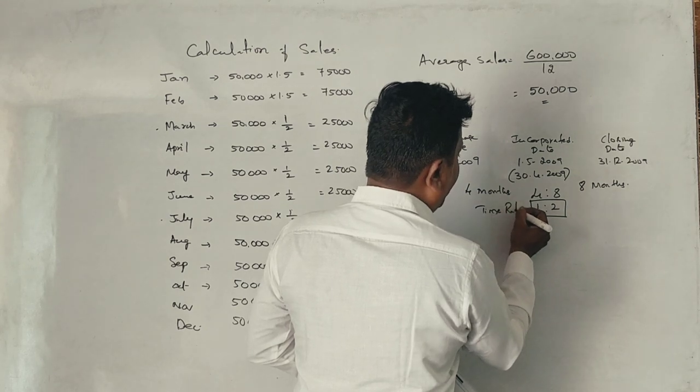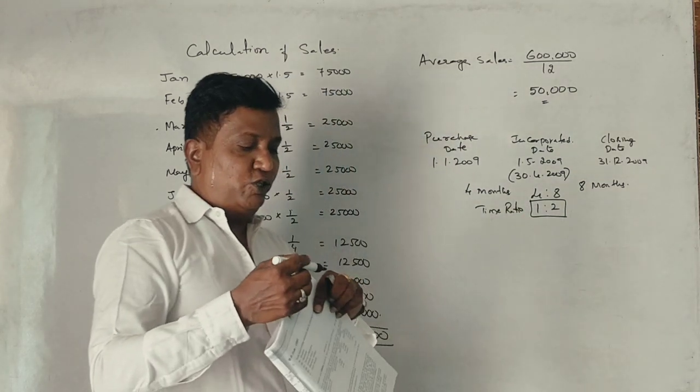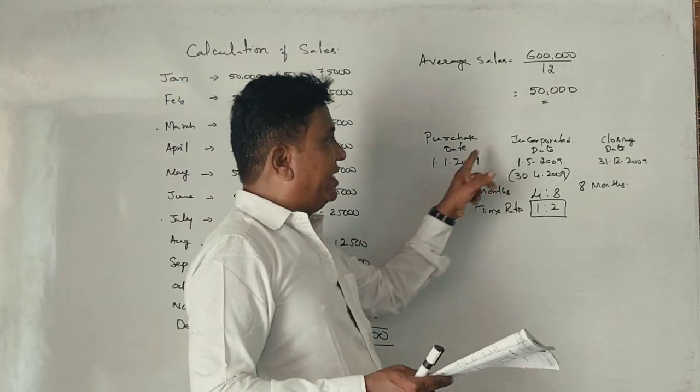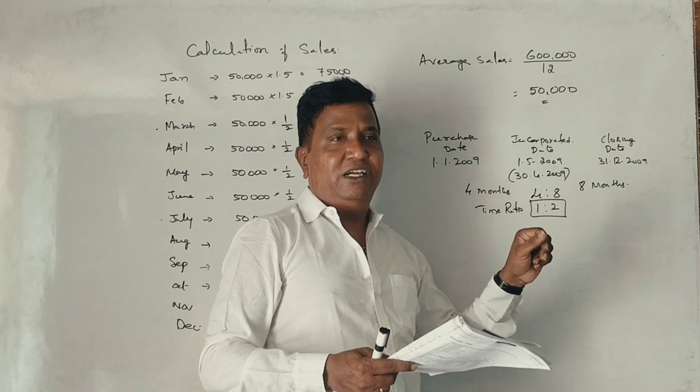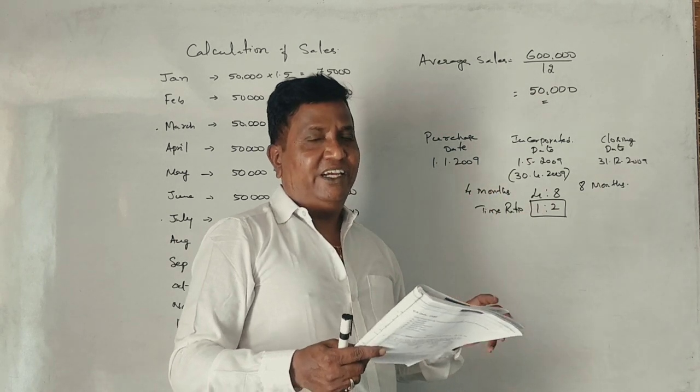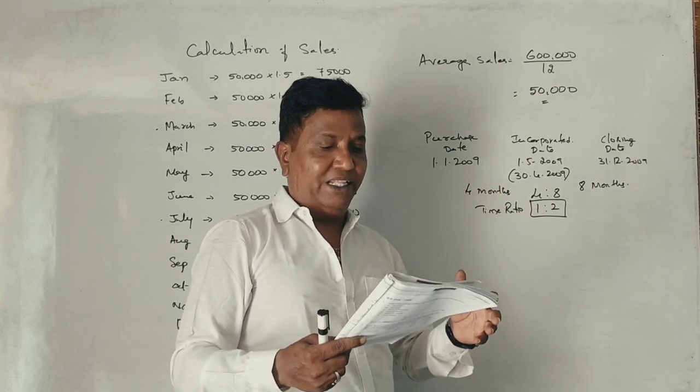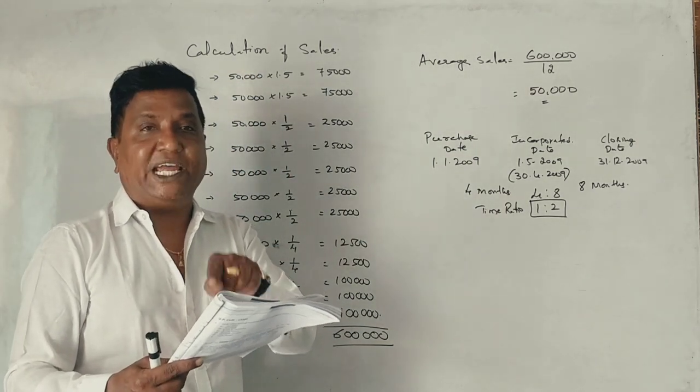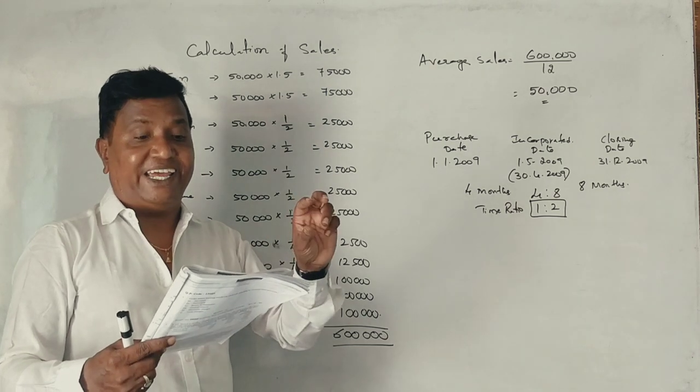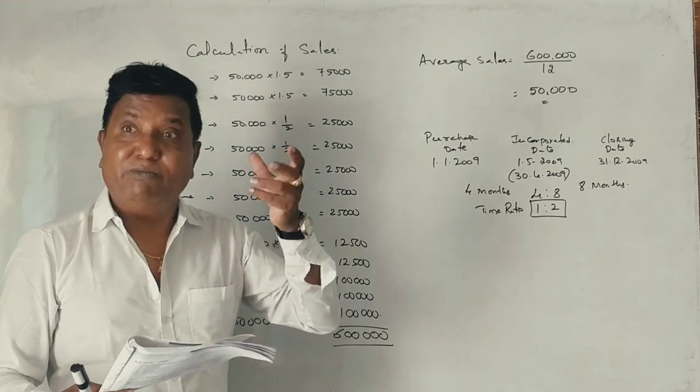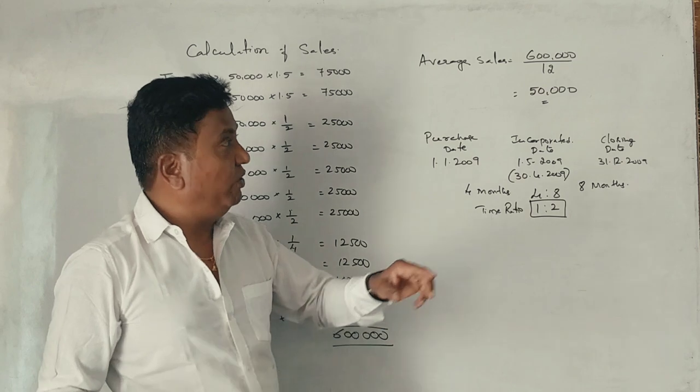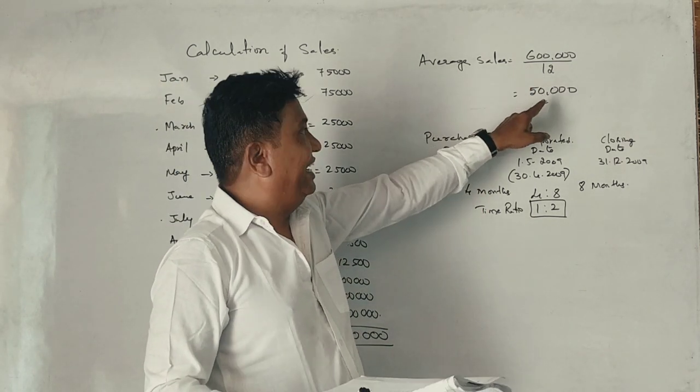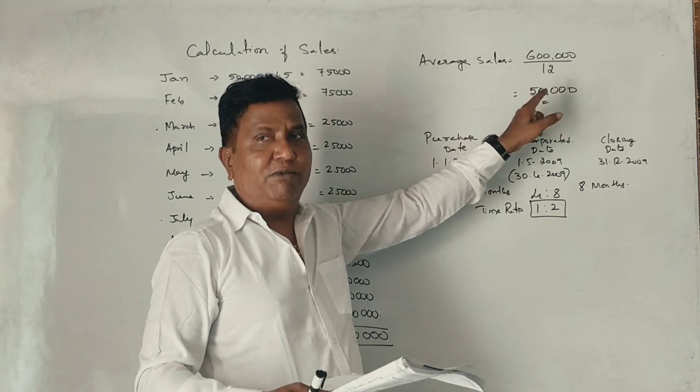The time ratio - we need to know the sales ratio. To calculate this, we need to know the total sales from January to December. We're not sure about the exact sales for each month, so we'll use average monthly sales.